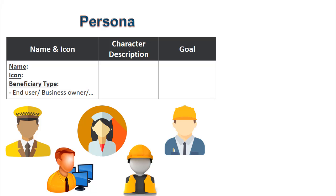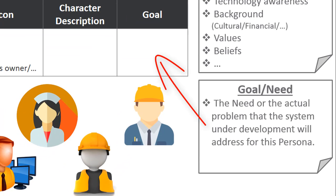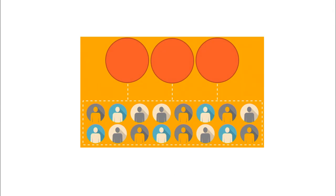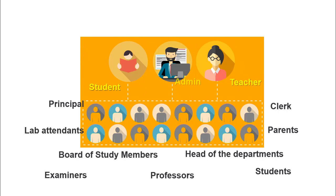Personas are representative or even imaginary yet realistic characters who possess the attributes of various system users and beneficiaries. In order to understand their problems or needs, we must understand persona attributes like: what age group or generation they belong to, their technology awareness, their background including cultural, educational, and economical aspects, and what personal, professional, and cultural values and beliefs they hold. The next column states the need or actual problem that the system under development will address for this persona. Persona helps in user experience designing. For the exam management system, there can be a variety of actual users, but we might create only three personas — student, teacher, and admin — since they can represent the system expectations of all other users.